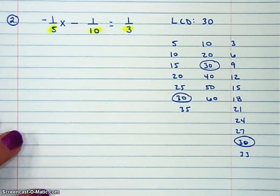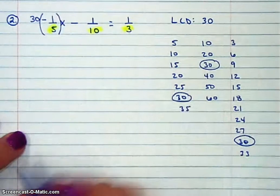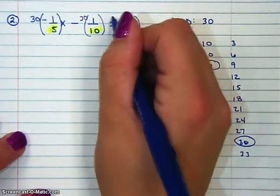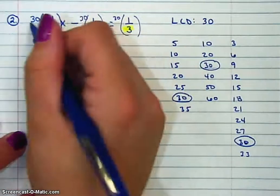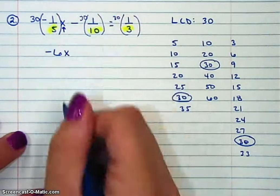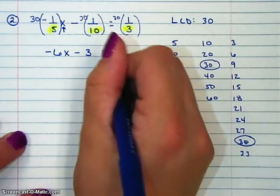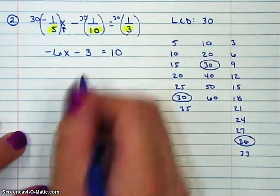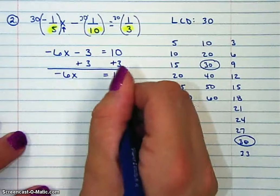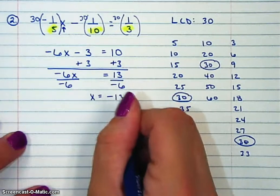So that's why I'm multiplying everything by 30. I'm going to take this negative 1 fifth and multiply it by 30, this 1 tenth and multiply it by 30, and this 1 third and multiply it by 30. So 30 times negative 1 fifth is negative 6x — don't forget our x. Minus 30 times 1 tenth is 3. And 30 times 1 third is 10. So add 3 to both sides: negative 6x equals 13. Divide by negative 6, so x equals negative 13 over 6.